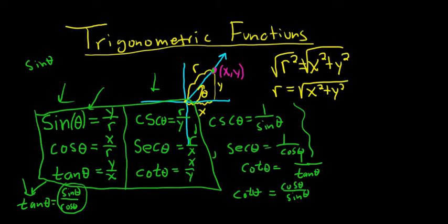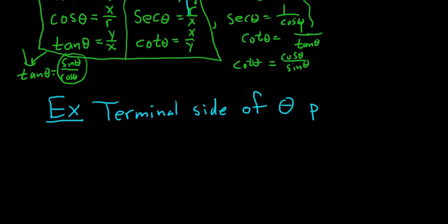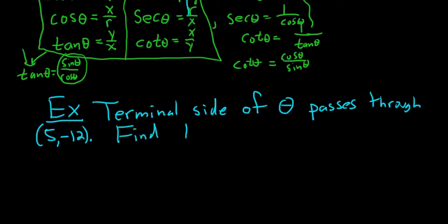Let's go ahead and do an example of actually finding the trig functions. So let's try this one. So ex, ex means example. So we're told that the terminal side of theta, so terminal side of theta passes through, and let's say it passes through 5, negative 12. And we'll find the trig functions, find the trigonometric functions of this angle. Solution.